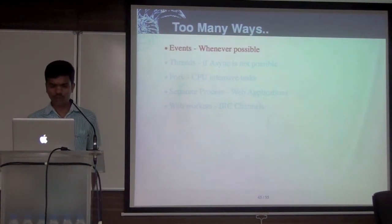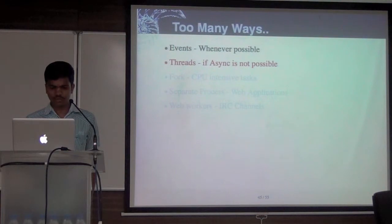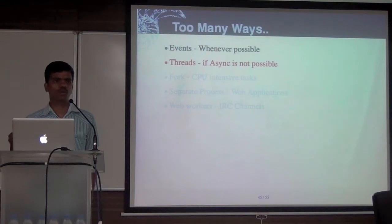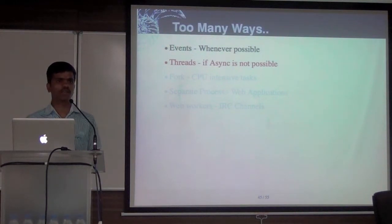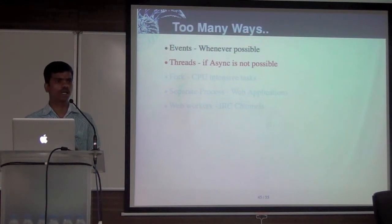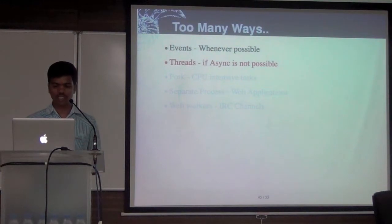Now that we know how to do concurrency in multiple ways — one way using events, and sometimes events are not possible, like the watch file example — there's no way for the OS to notify you asynchronously. So that time we have to use threads. How to use threads in Node.js? You can create a C function that does threading and then expose the interface via JavaScript. Threading can be achieved even with Node.js.